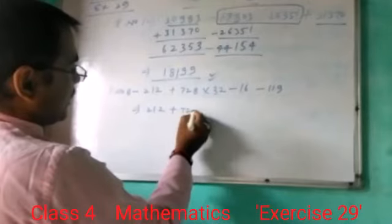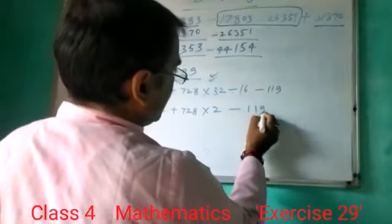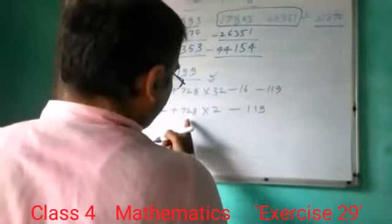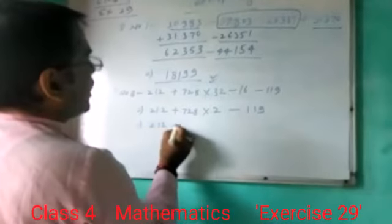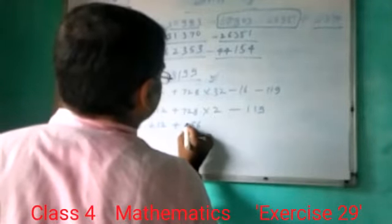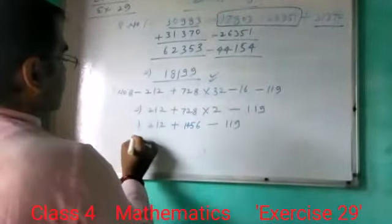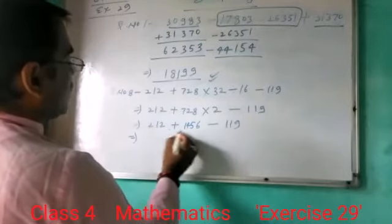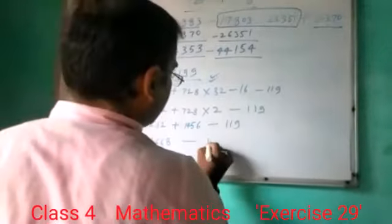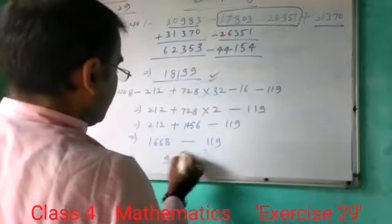212 plus 728 into 32 divide 16 minus 119. Then after divide, multiply: 212 plus 28631, 22415, 27418 minus 190. Then addition: 628, 516, 4261 minus 190. 18 minus 9 is 9, 5 minus 1 is 4, 6 minus 1 is 5, 1.